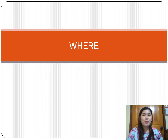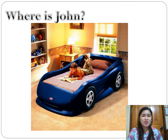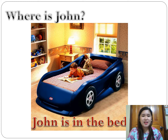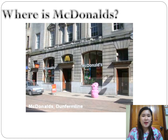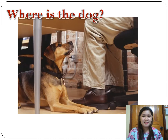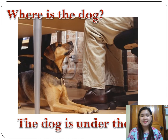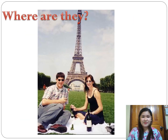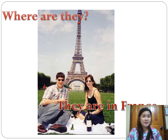Next we have 'where.' Where is John? John is in the bedroom. Where is McDonald's? McDonald's is on the high street. Where is the dog? The dog is under the desk. Where are they? They are in France.